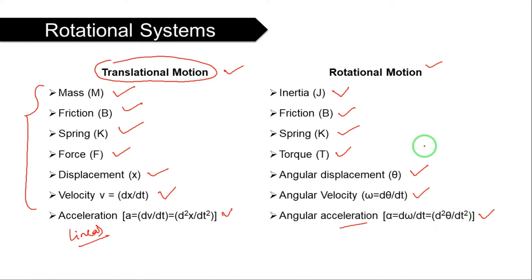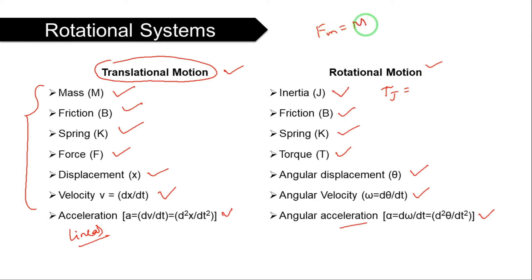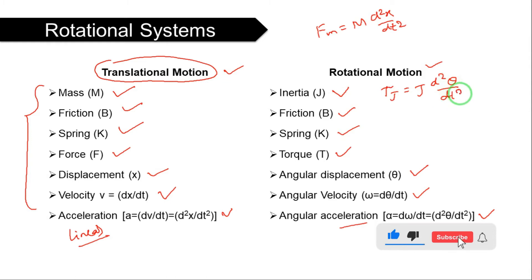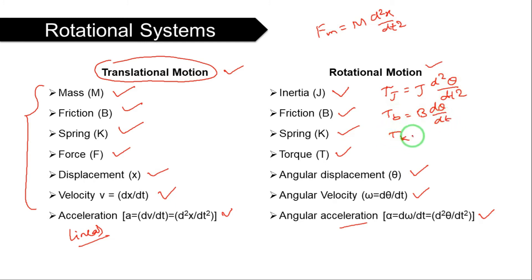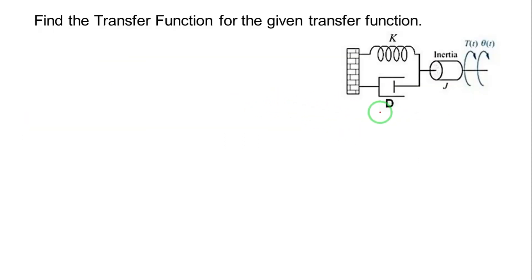All the procedure is the same; there are only small differences in notation — theta, J, omega. The opposing torque due to moment of inertia TJ equals J·d²theta/dt², just as in the translation system FM equals m·d²x/dt². TB equals B·dθ/dt, and TK, the opposing torque due to the spring, equals K·theta.